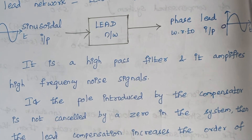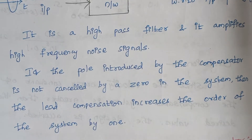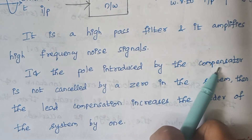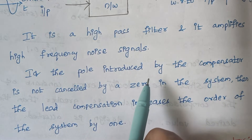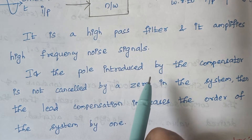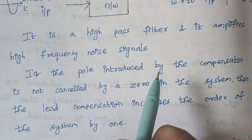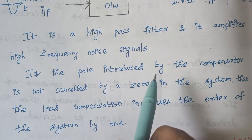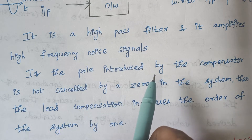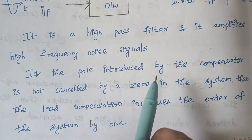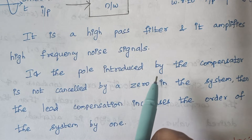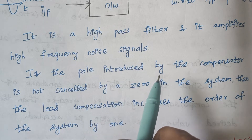Now, consider the pole introduced by the compensator. What is meant by a compensator? A compensator is a device which is introduced in a system to get the desired output. Even in a control system or a feedback system, there are certain cases where we cannot get the required output, so there is a necessity to introduce the compensator. In terms of transfer function, a compensator will have poles and zeros.